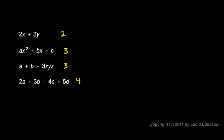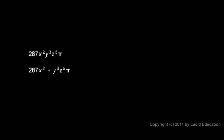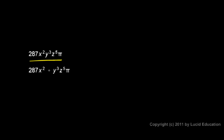It's important to remember that terms are the things that are added together. Each term could be a simple number, or just a simple variable like a or c, or it could be a combination of numbers and variables multiplied together. Take a look at these examples: 287x squared y cubed z to the 5th times pi is one expression, and 287x squared plus y cubed z to the 5th times pi is another. Even though these look similar and have the same numbers, variables, and exponents, the two-term expression is mathematically an entirely different thing than the single-term expression. In the first, all those things are multiplied together as one term. In the second, there are two separate terms, and that makes it entirely different.